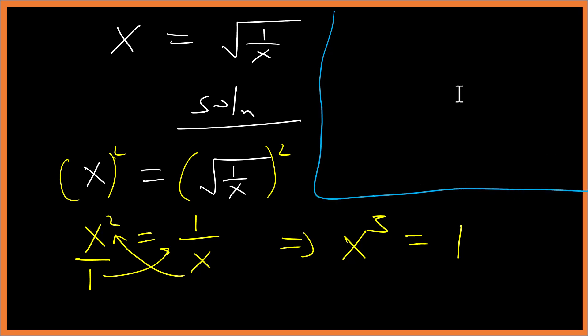So x³ minus y³ is the same as (x minus y)(x² plus xy plus y²).